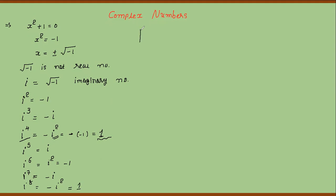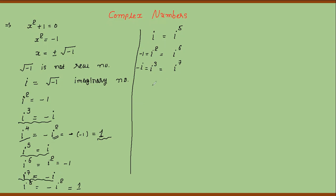So this is a cyclic sequence. Iota¹ = i, iota⁵ = i; iota² = -1, iota⁶ = -1; iota³ = -i, iota⁷ = -i; iota⁴ = 1, iota⁸ = 1. The pattern repeats with period 4.